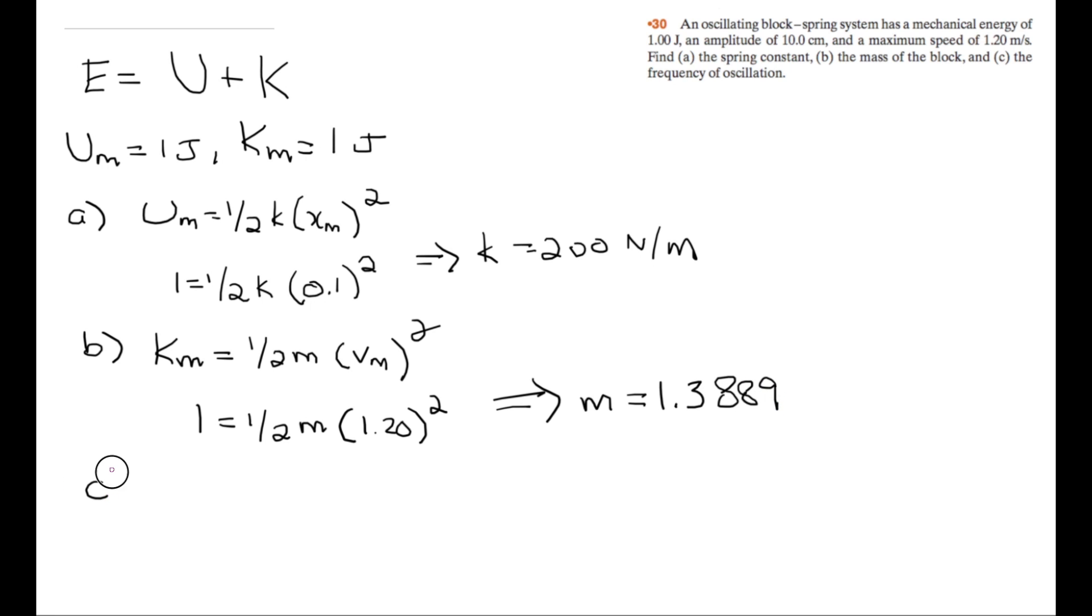And for C, we're trying to find the frequency. So we know that angular frequency is equal to root K over m, which is equal to the square root of 200 over 1.3889. And this is equal to 12.0 radians per second.